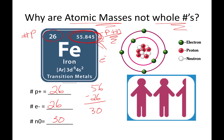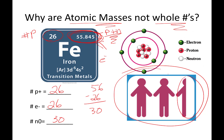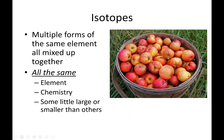This is the case for every element out there. It's sort of like when you read census data and they say the average family has 2.3 children — how do you get 0.3 of a child? It's a mathematical, statistical thing, and there's got to be an explanation. That explanation is something called isotopes.